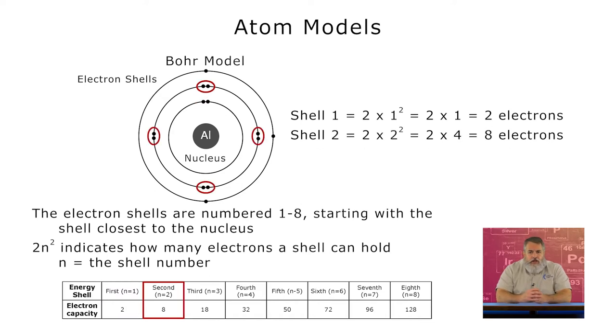For the second shell, n is 2, 2 squared is 4, and 2 times 4 is 8. So, the second shell holds a total of 8 electrons, and the second shell will never have more than 8 electrons in it because it can only hold 8.